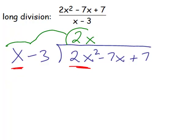And we will multiply. In fact, we're going to multiply by x minus 3. As we do, we get 2x squared minus 6x.